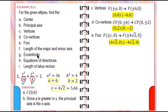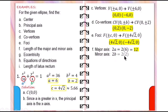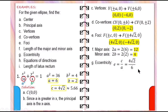The length of the major axis is 2a, where a equals 6, so the length is 12. The length of the minor axis is 2b, where b equals 2, so the length is 4. The eccentricity equals c over a, where c equals 4 square root of 2 and a equals 6. Simplifying, the eccentricity equals 2 square root of 2 over 3, which is approximately 0.94. An eccentricity close to 1 indicates the ellipse is elongated.